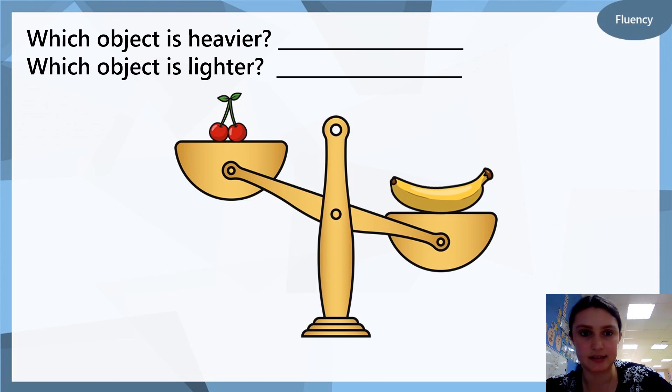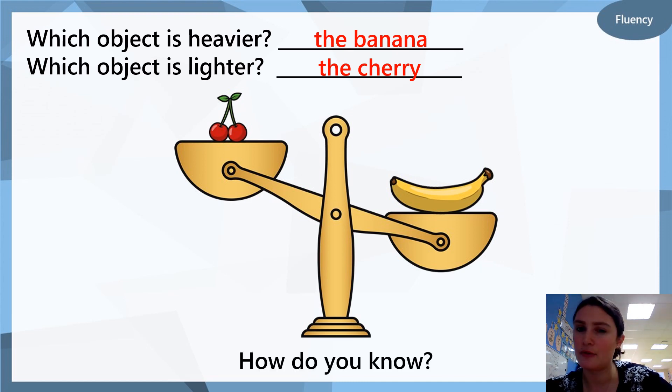Let's check our answers. For heavier it's the banana and for lighter the cherries. How do you know? Can you tell an adult at home or can you write down on your paper how do you know that the banana is heavier and the cherry is lighter?